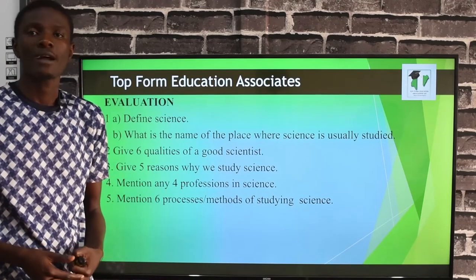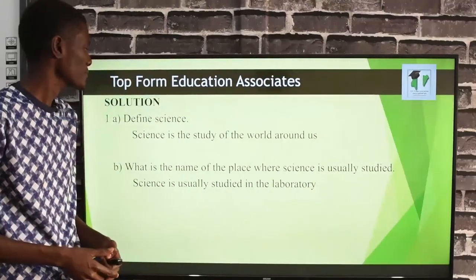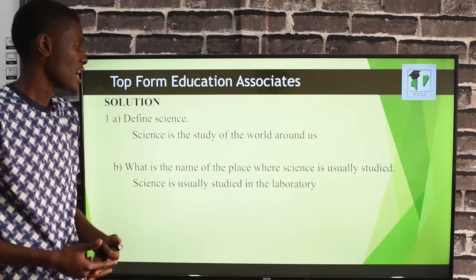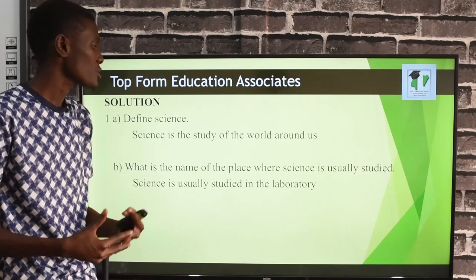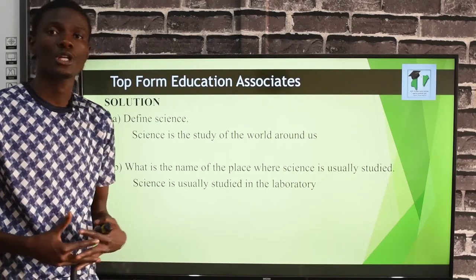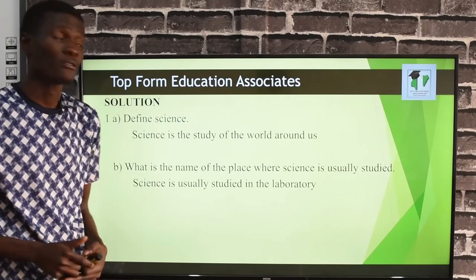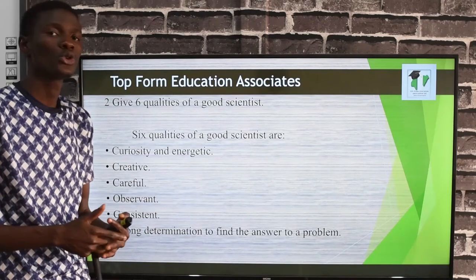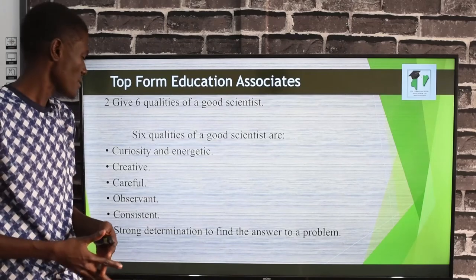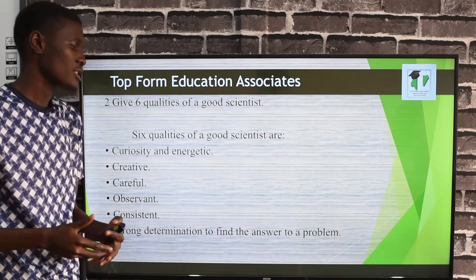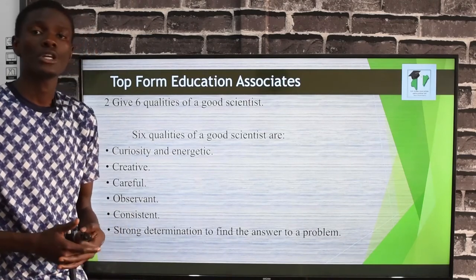Let's see the answers. Question one: science is defined as the study of the world around us. The place where science is usually studied is the laboratory. Question two — six qualities of a good scientist: curiosity and energetic, creative, careful, observant, consistent, and strong determination to find answers to a problem.